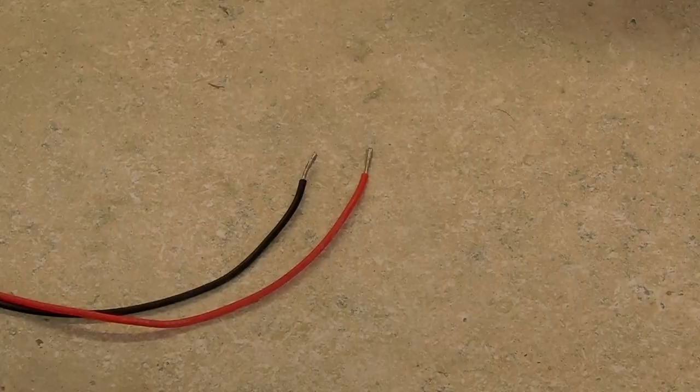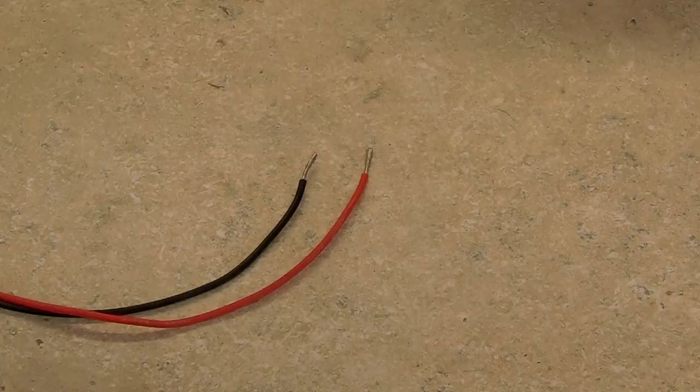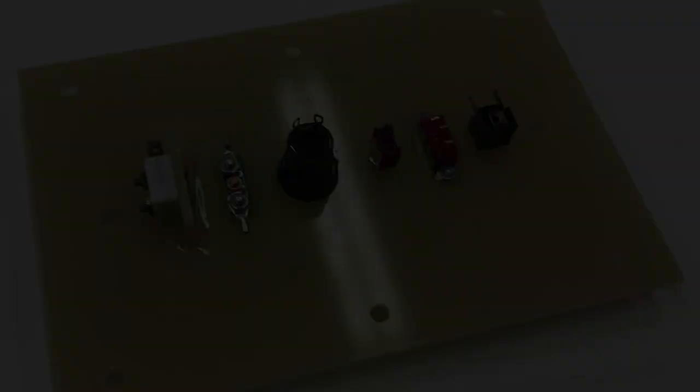And then seventh is a surprise entry, the non-switch. The twist and tape, or twist and tuck as it's called, where you skip the switch and you just twist the two wire ends together.